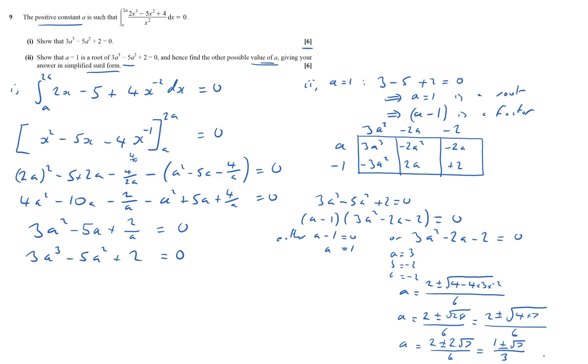It says in simplified form, but a is positive, so a is positive, therefore a equals 1 plus root 7 over 3, not 1 minus root 7 over 3, because that's negative. And it gave you a tiny clue here, the other possible value of a, not 2 values. You have to be careful, but that's question 9, and the whole paper done.